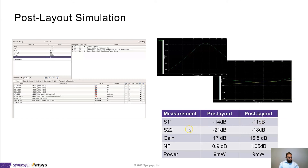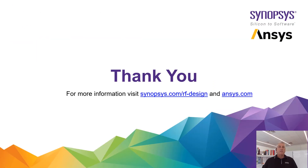We see that S11 and S22 have degraded slightly, but they're still better than negative 10 dB, so we're still okay with that. Gain has dropped by about half a dB and noise figure has degraded by about a tenth of a dB. Power consumption stayed relatively constant. Thank you for watching this module of our three-part video series to learn more about how to design and verify state-of-the-art RFICs using the Synopsys-Ansys Custom Design Flow. For product information, please visit our links.